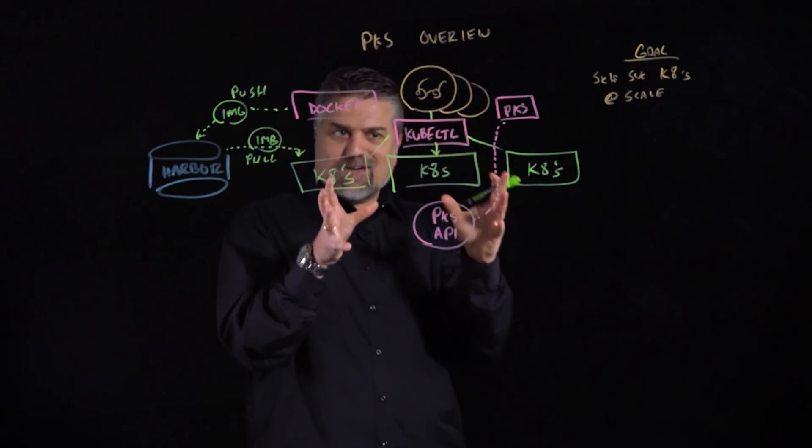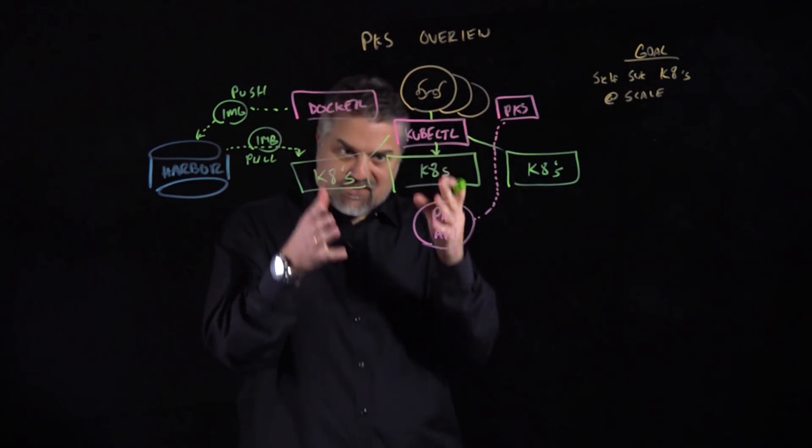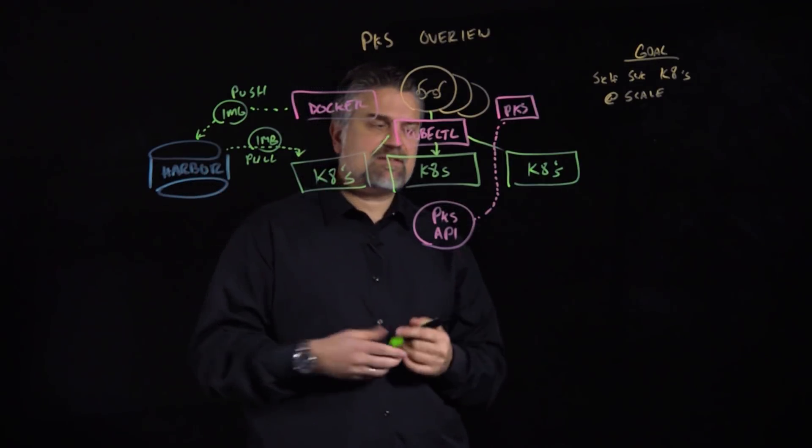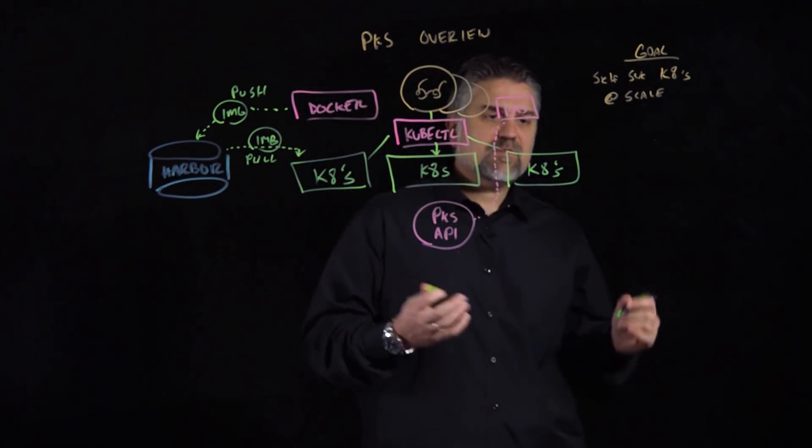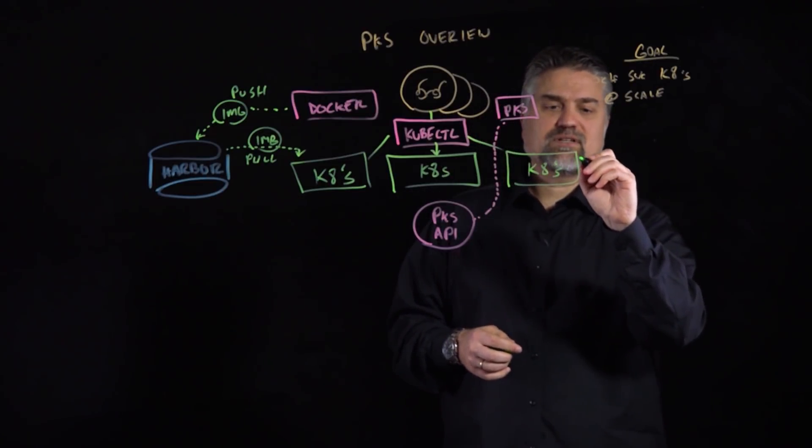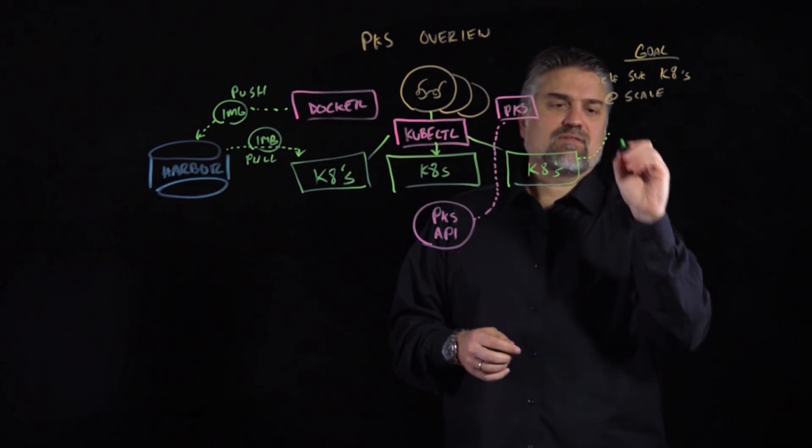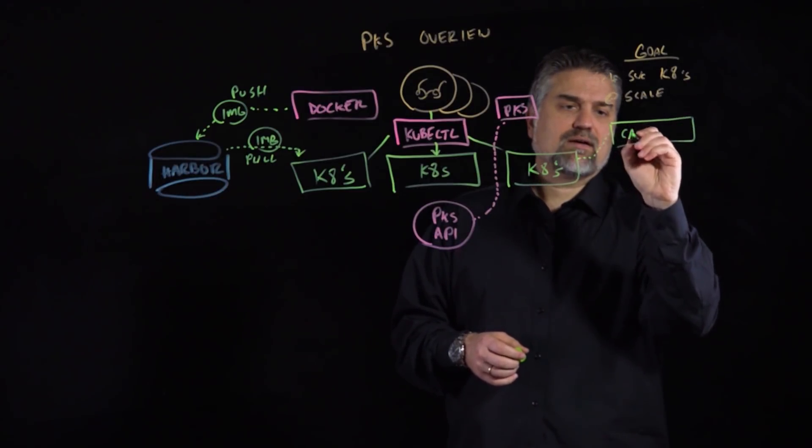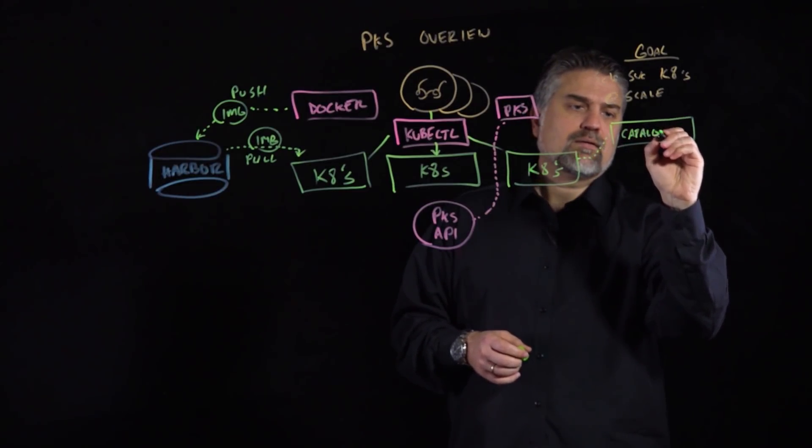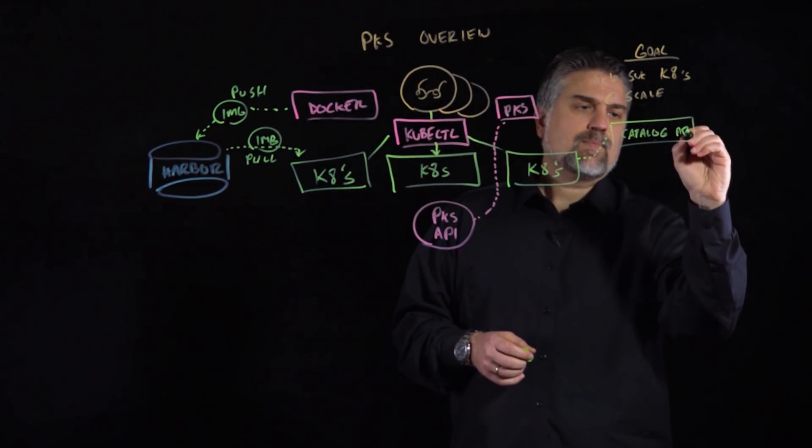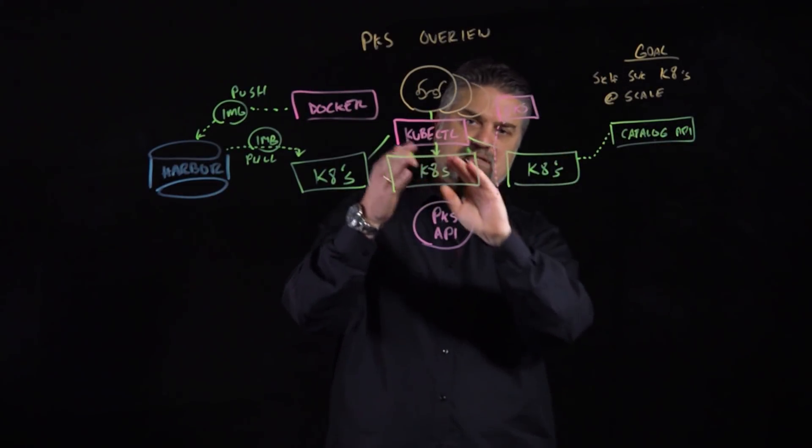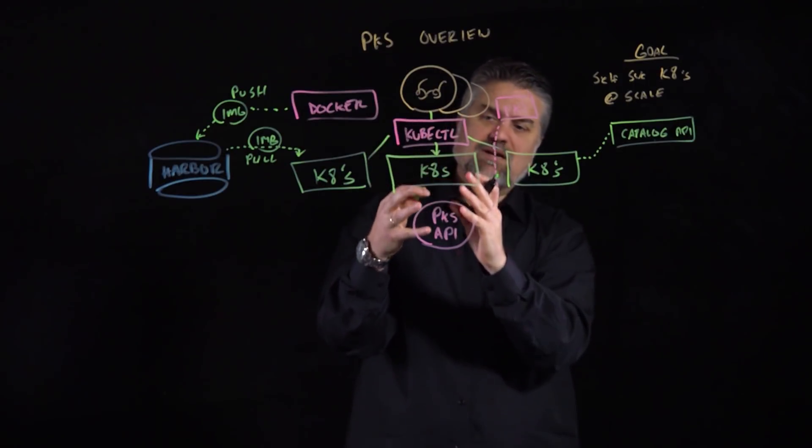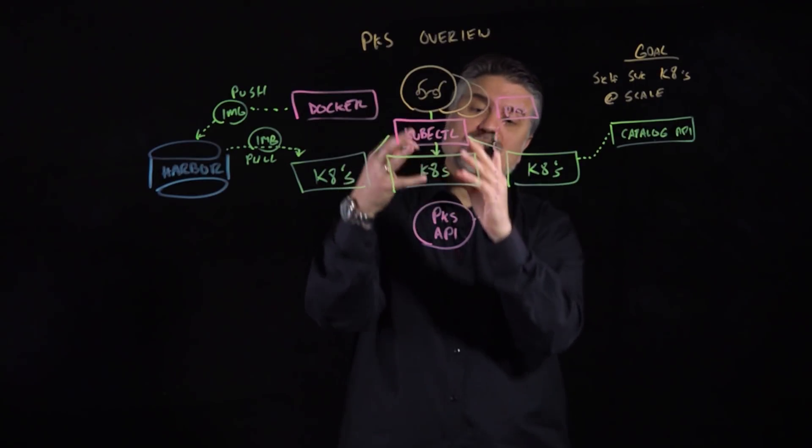In addition, when we're running our applications it's not just a place to run them in Kubernetes and a place to store our images, but we need access to external services. Some of the services can expose themselves in different ways. So one of the concepts that we offer with PKS is we'll have a catalog API, and this will be behind the Kubernetes experience. So the developer would still be accessing all of this through the kubectl API or commandlet or through the Kubernetes API.